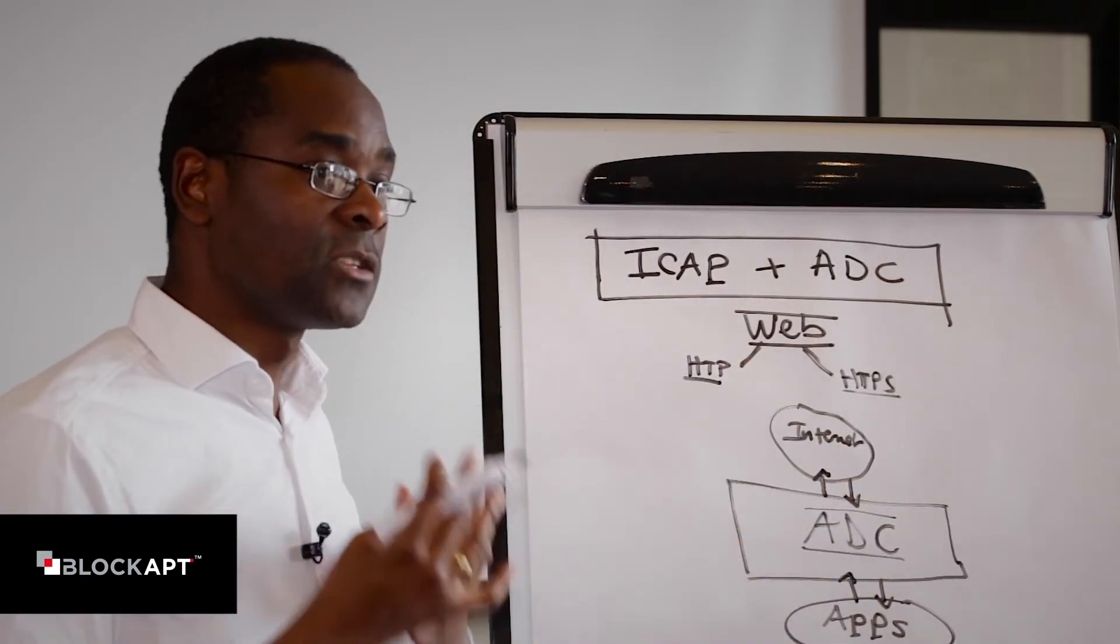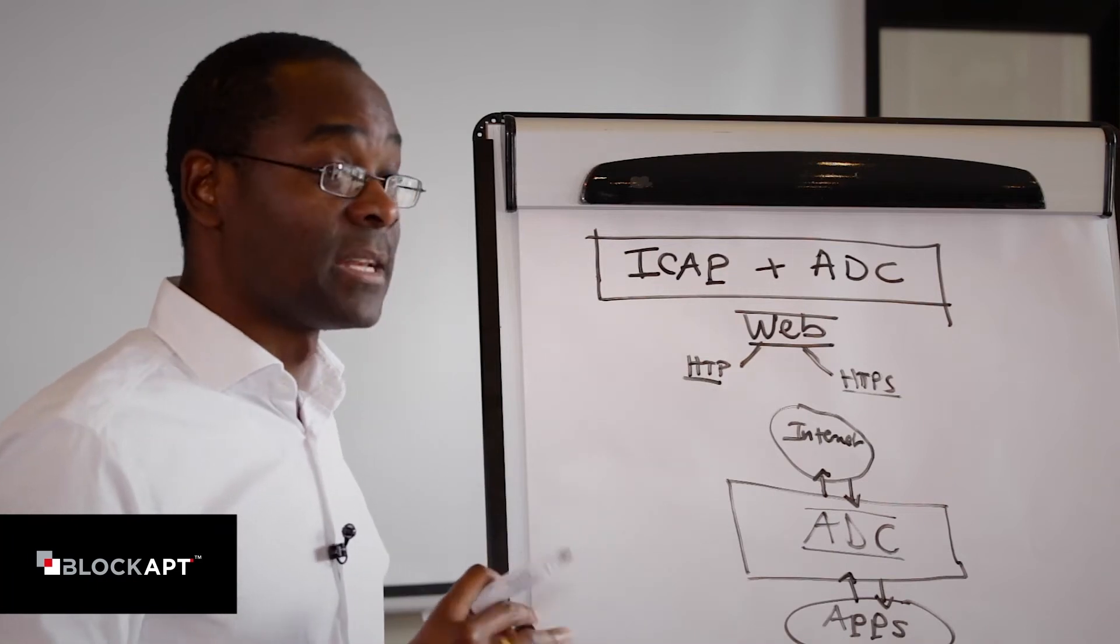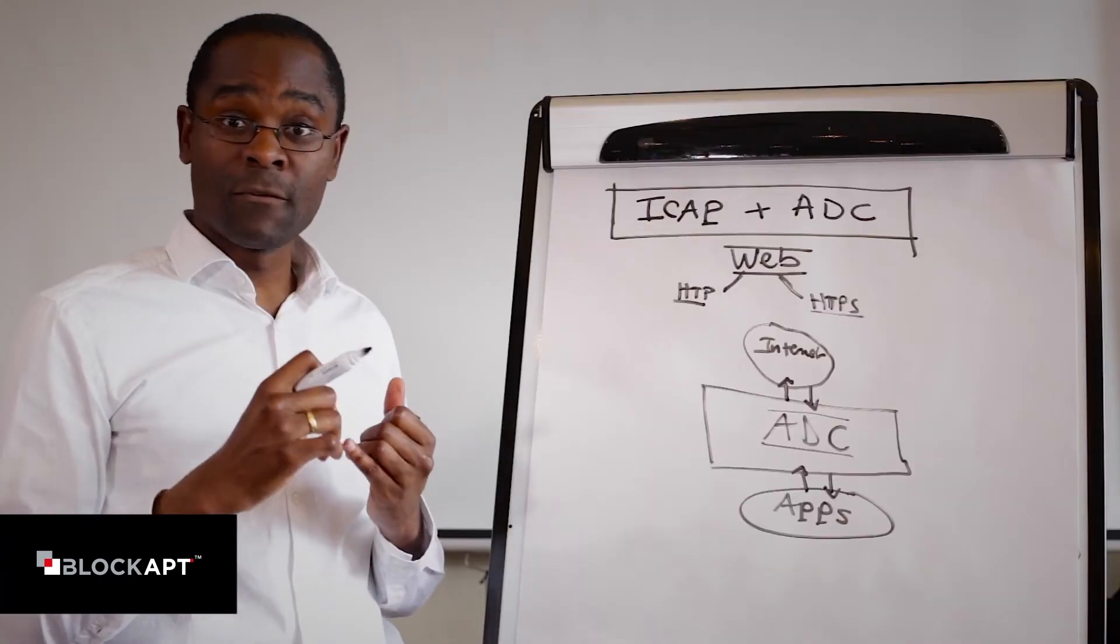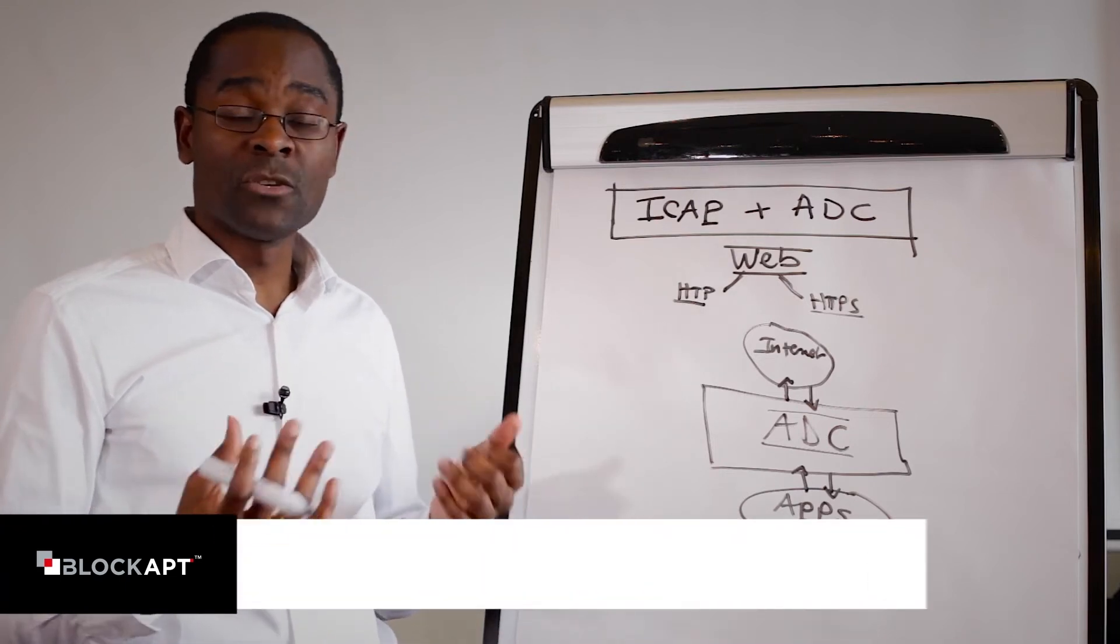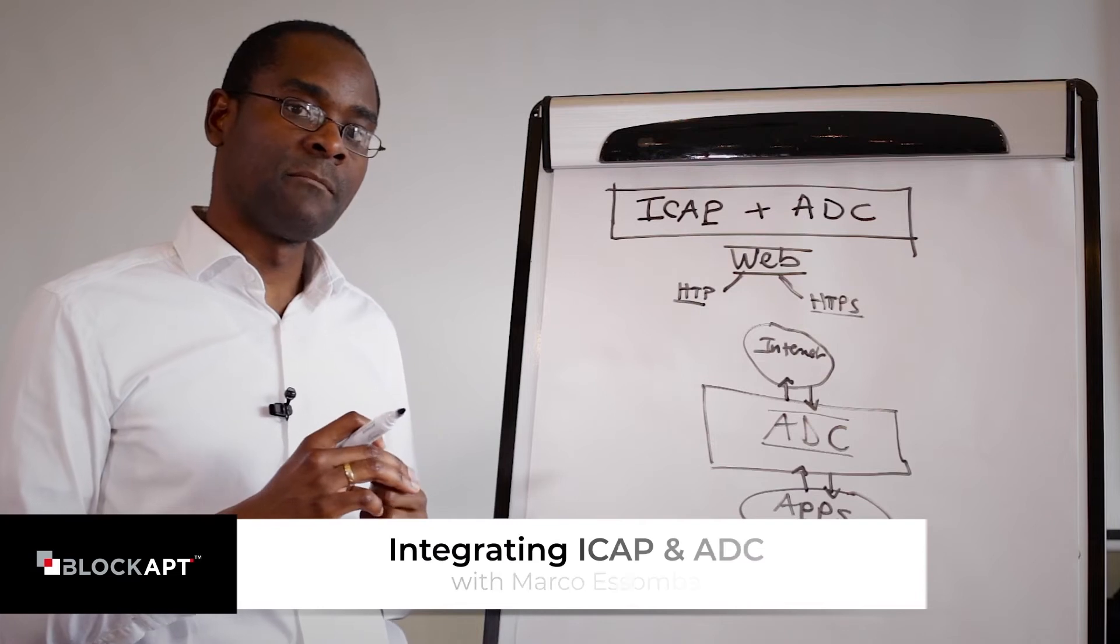So we need some sort of plugin. We need something that will allow us to go ahead and look at that traffic and inspect it for malware, inspect it for sensitive information leaving the company, and essentially what we call data leakage prevention, DLP.